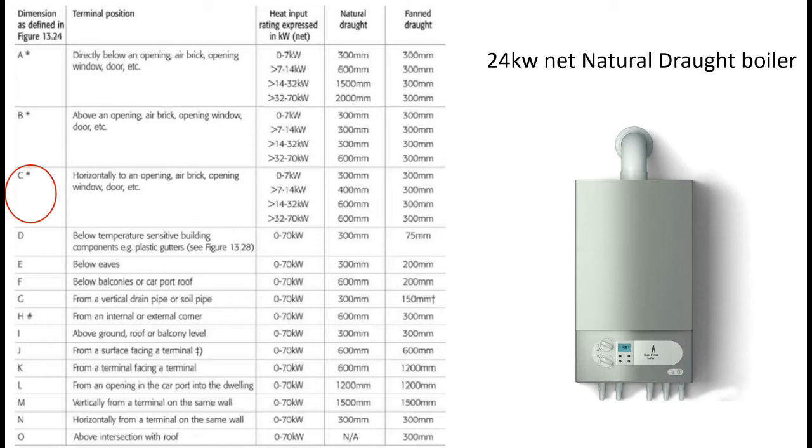So what we need to do now is identify the size. So it's between 14 and 32 kilowatts. We know it's natural draft. And we simply match these two up together, see where they meet. And it's at 600 millimeters. So the measurement C on the previous drawing, when you're using a 24 kilowatt natural draft boiler would be 600 millimeters minimum distance away from the window.